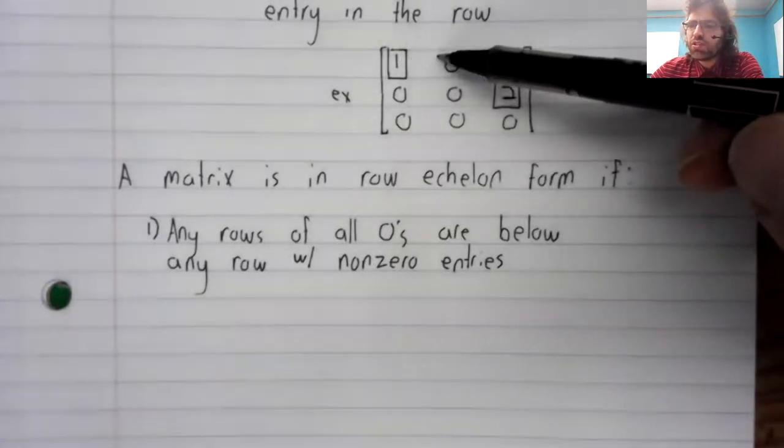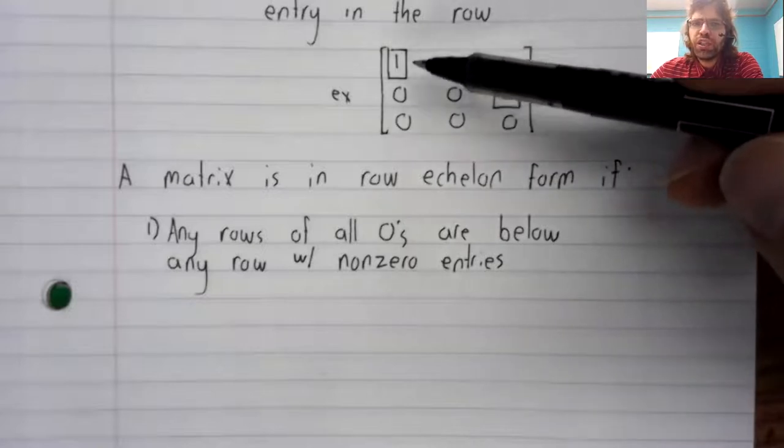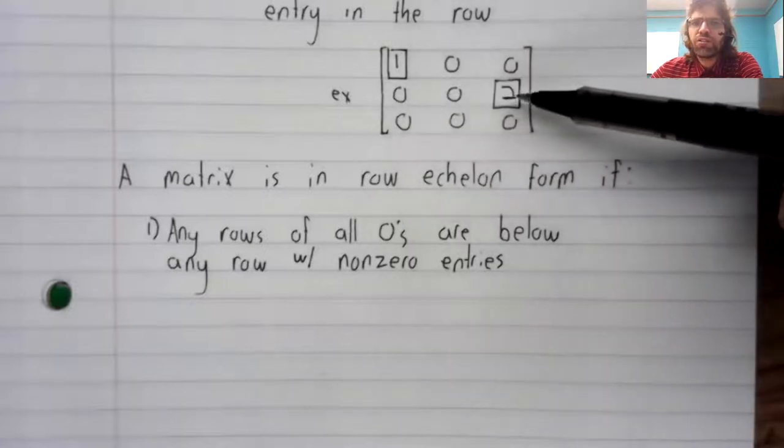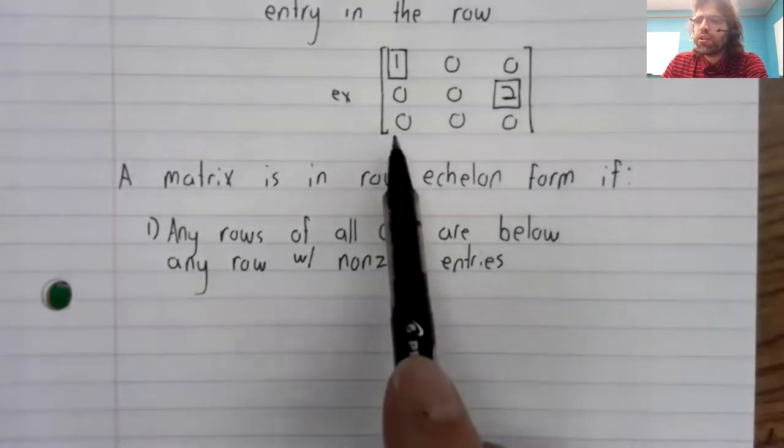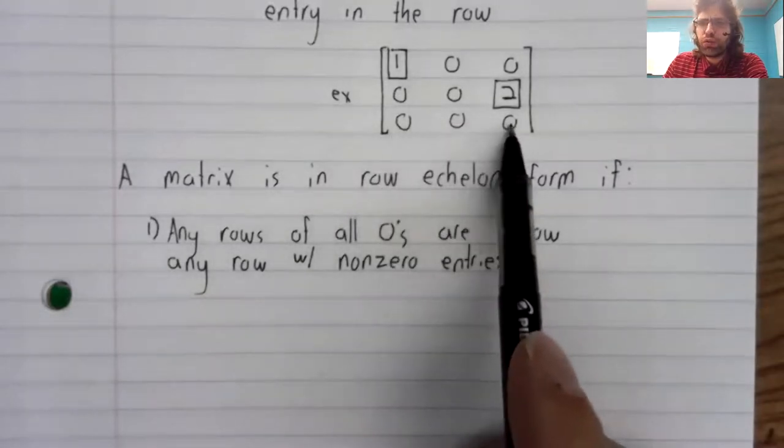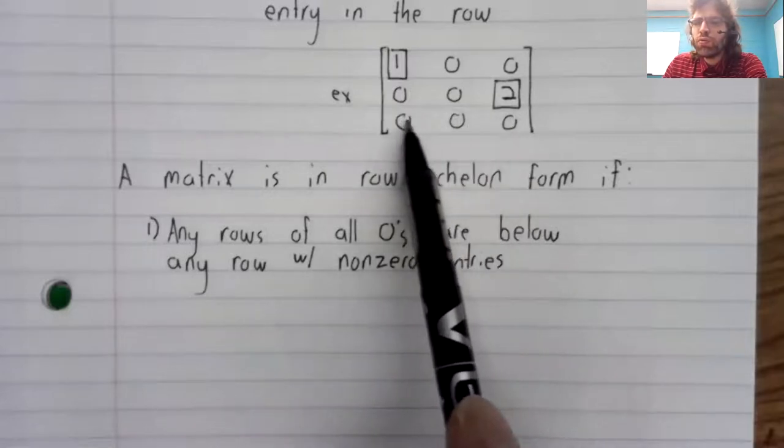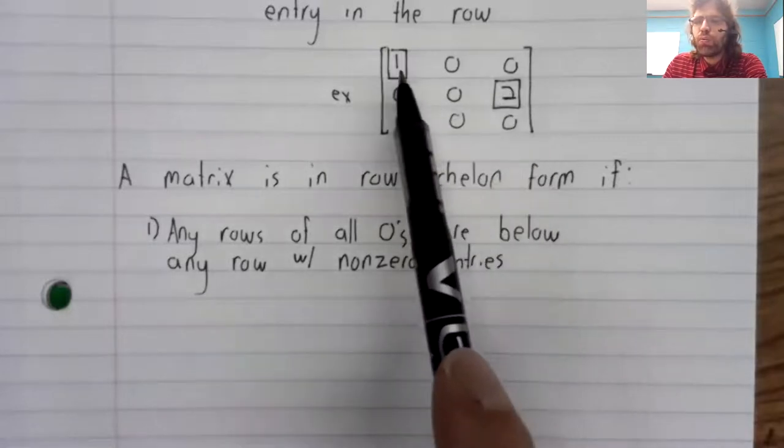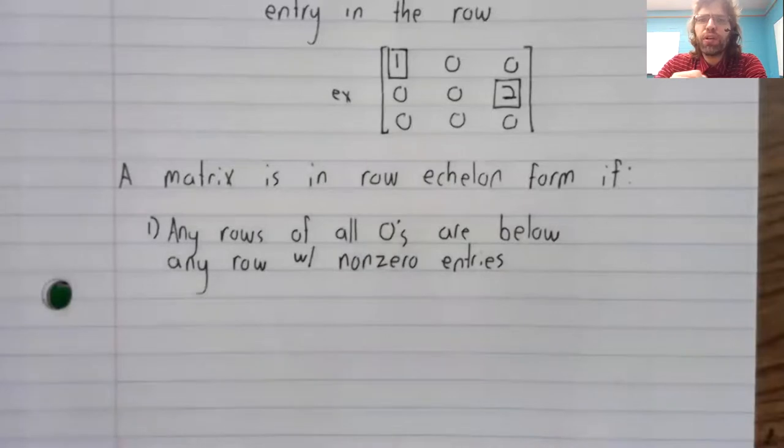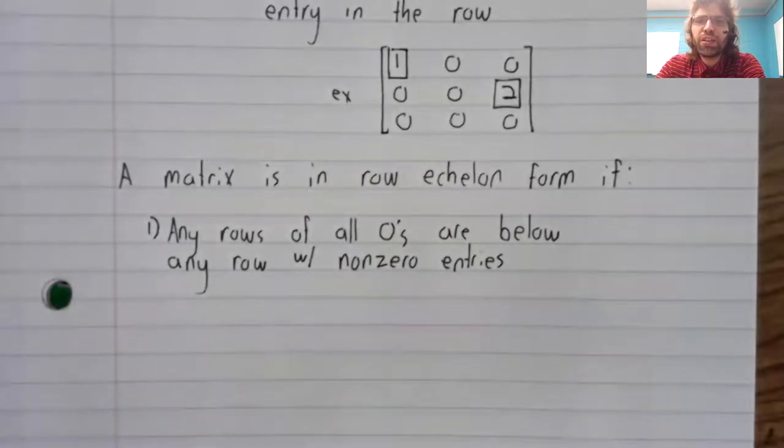This row has a non-zero entry. This row has a non-zero entry. This row is all zeros, and the row of all zeros is below the rows with non-zero entries.